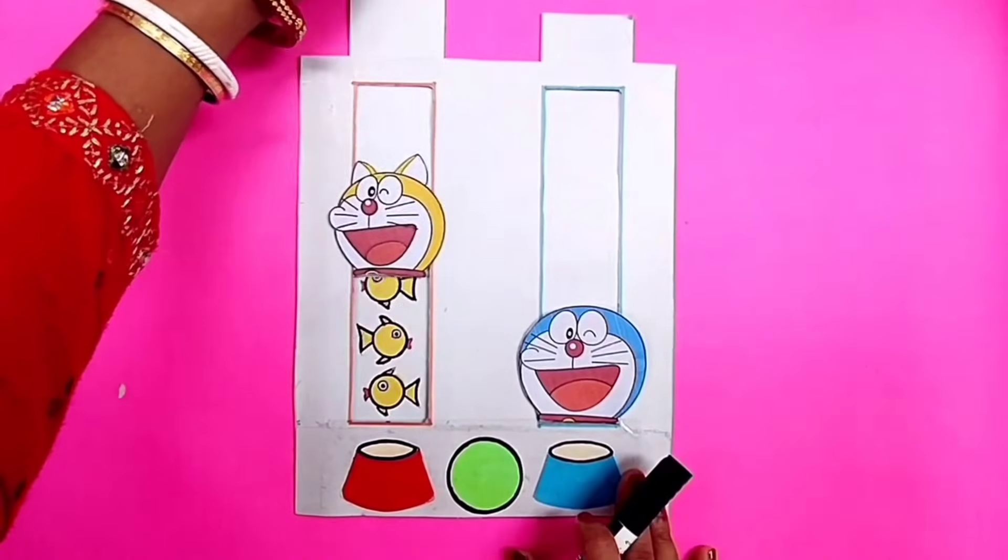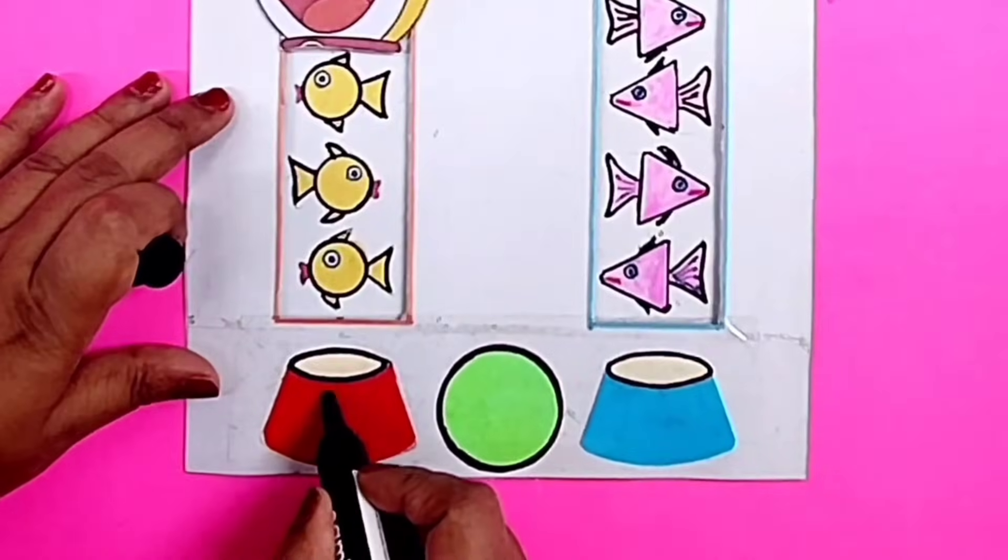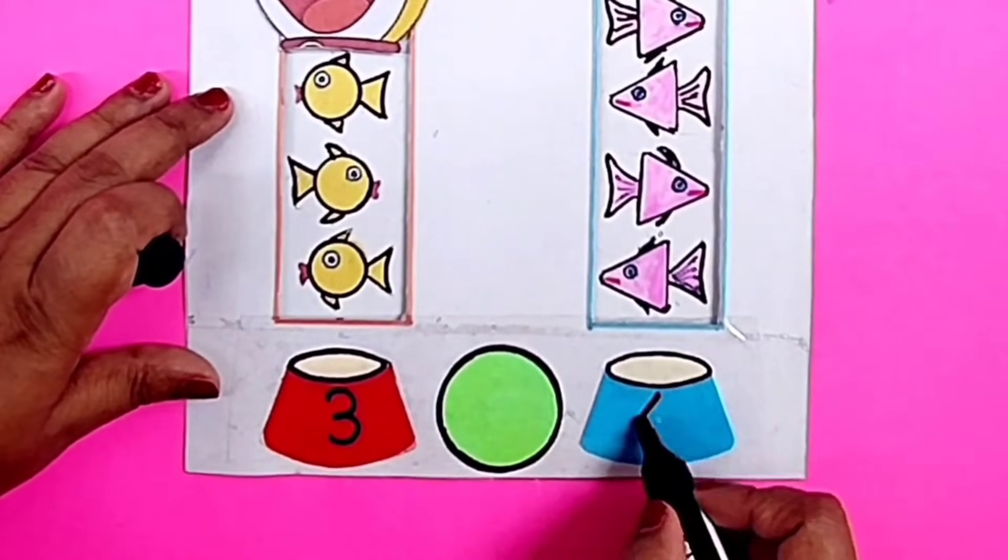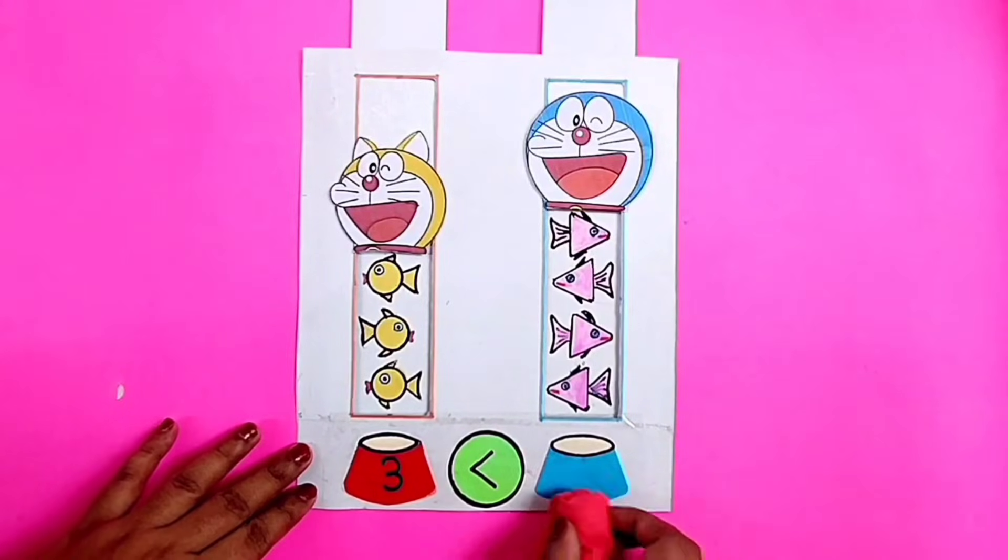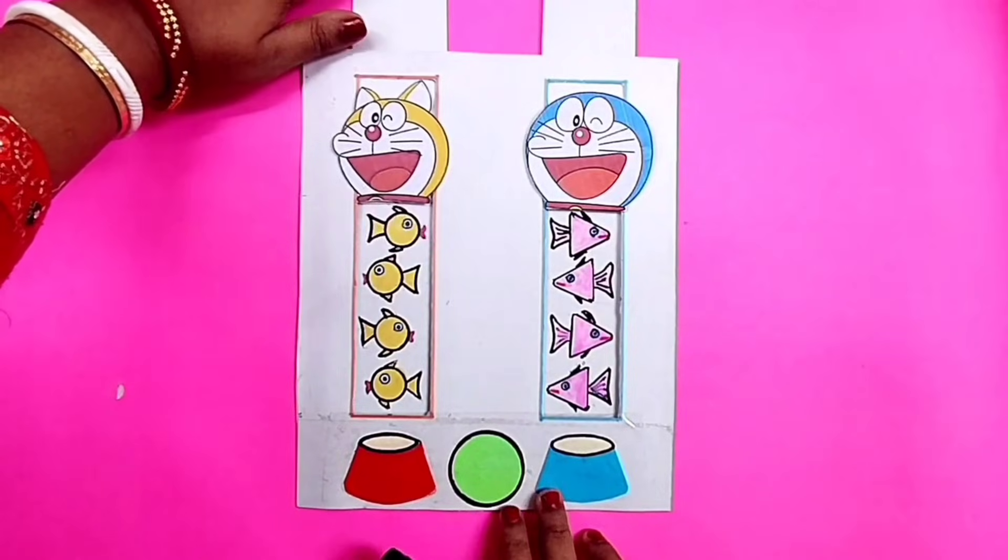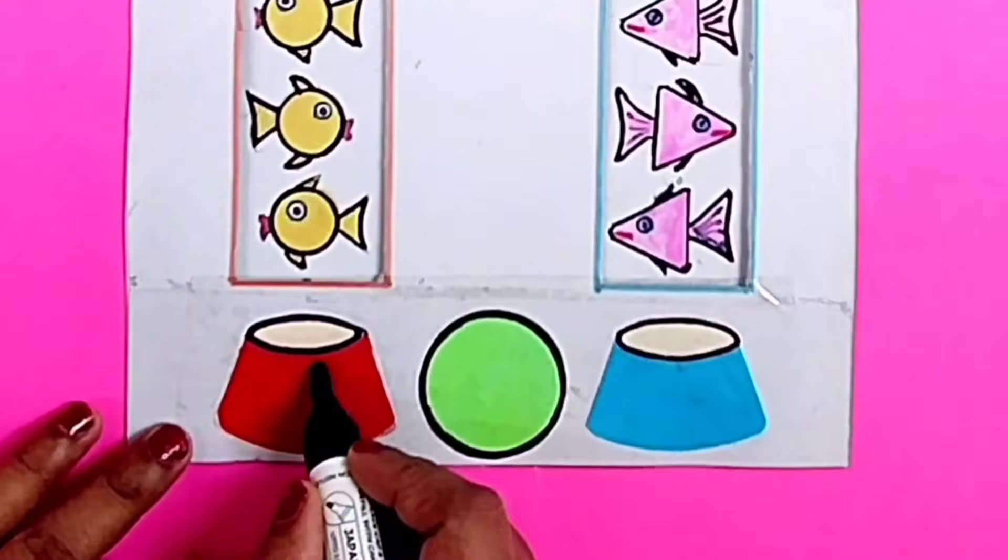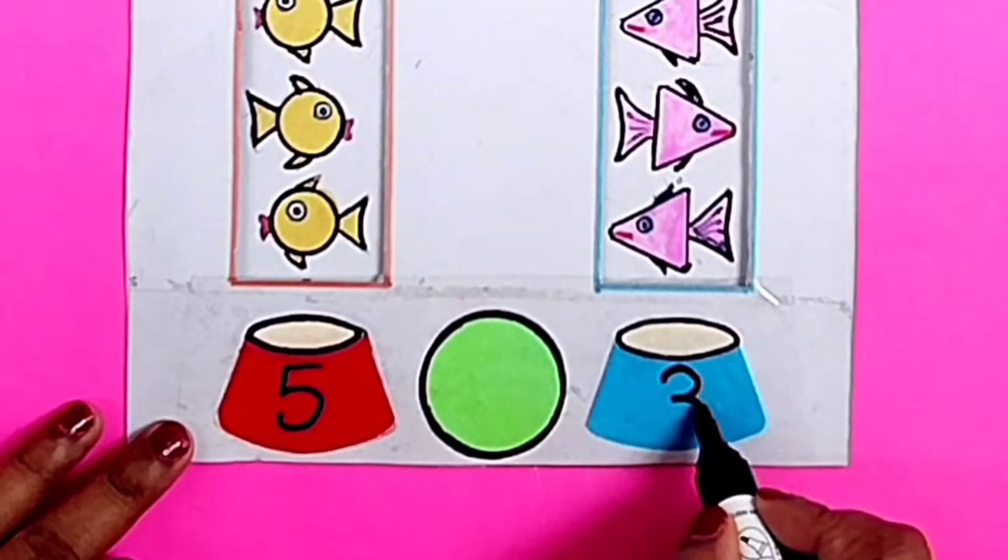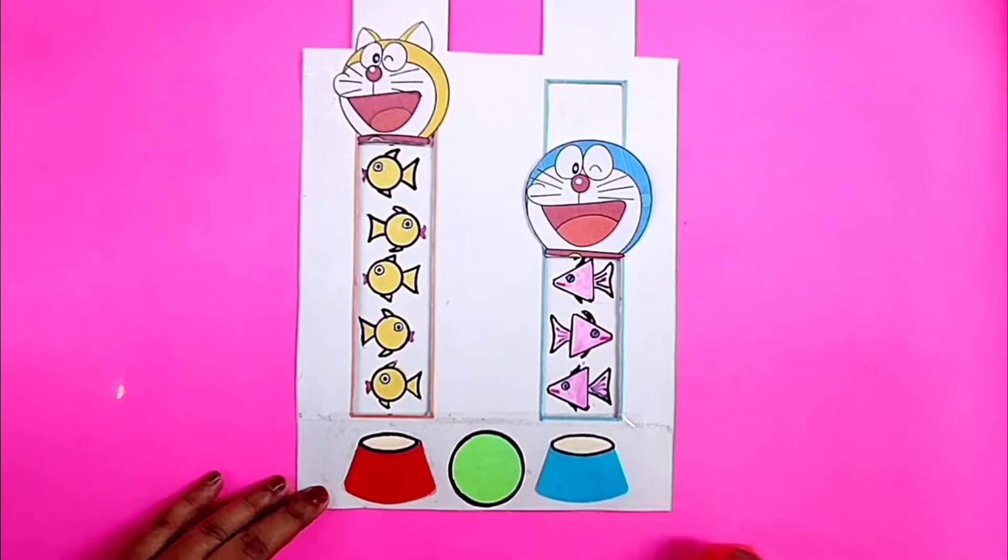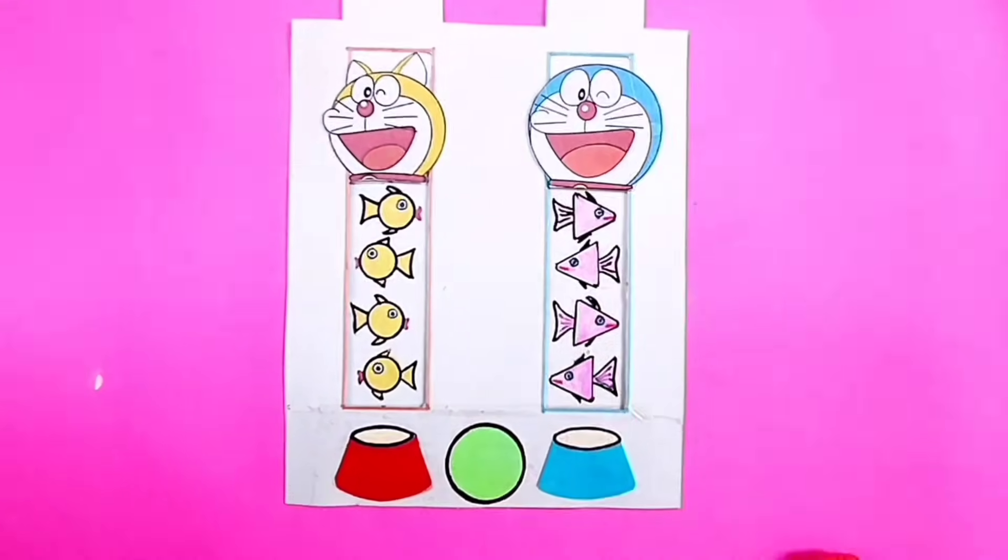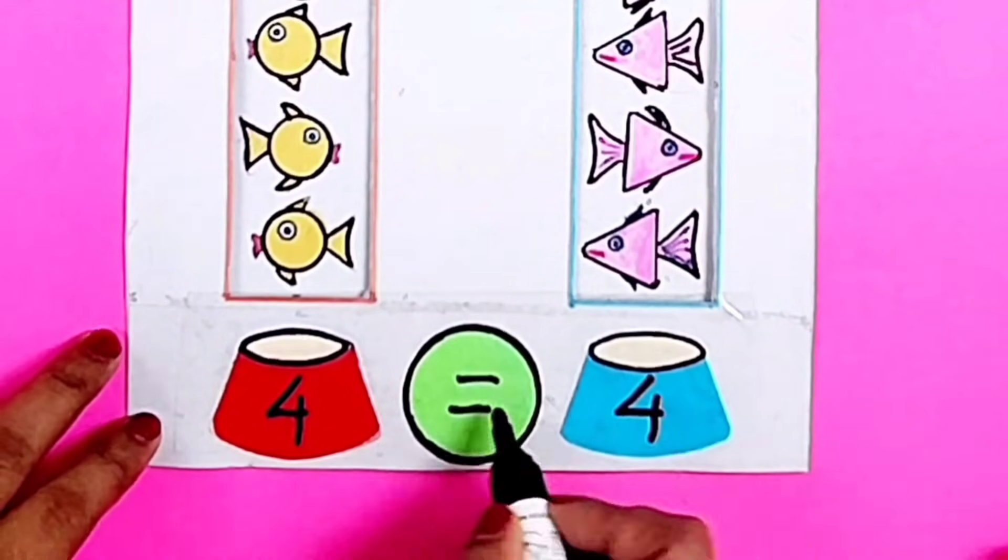Doraemon is happy because he has three fishes, but Doraemon is happier because he has four fishes, and three is lesser than four. Now Doraemon has two more fishes and Doraemon ate one fish, so Doraemon has five fishes and Doraemon has three fishes. Five is greater than three, so now Doraemon is happier. Now Doraemon ate one fish and Doraemon got one fish. Now they both have equal fishes and they both are happy.